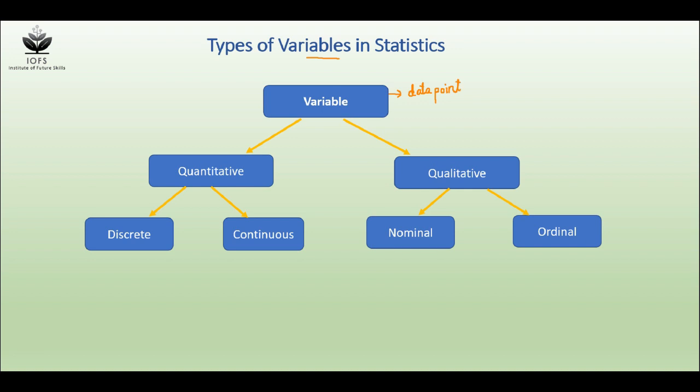Variables are broadly classified into two types. One is quantitative data, which is also referred to as numeric data, and the other is qualitative data, which is also referred to as categorical. Let's see one by one what each means.